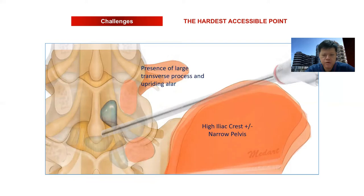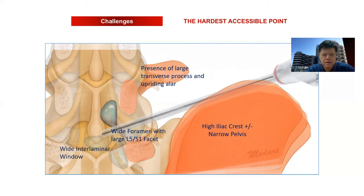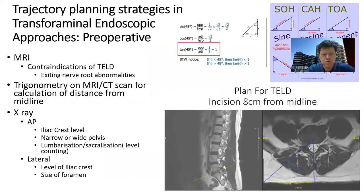A narrow pelvis further complicates matters if you want to address a central disc, as the distance from the iliac crest to the central disc region is very narrow. This, together with a wide foramen, means there may be a lot of bony resection required for central or paracentral disc. We may consider using the interlaminar approach for central, paracentral, or upward migrating disc, since it has a wide interlaminar window to explore. However, our topic today is on transforaminal endoscopic surgery, so my focus will be on that.